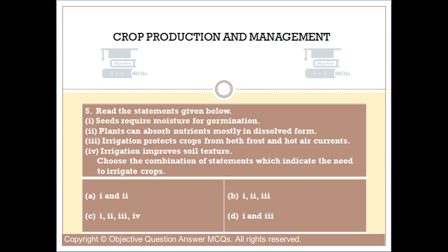Question number five: read the statements given below. One: seeds require moisture for germination. Two: plants can absorb nutrients mostly in dissolved form. Three: irrigation protects crops from both frost and hot air currents. Four: irrigation improves soil texture. Choose the combination of statements which indicate the need to irrigate crops. Option A: one and two. Option B: one, two, and three. Option C: one, two, three, and four. Option D: one and three. The right answer is option C.